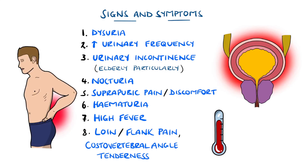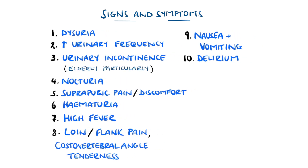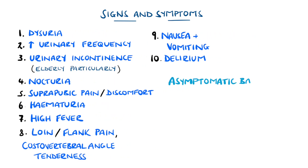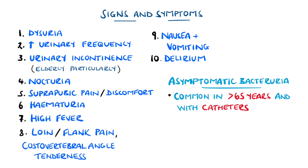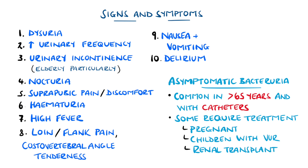Bear in mind that patients may also present with nausea, vomiting, and even delirium and sepsis in some instances, particularly the elderly. Importantly, many people over the age of 65, or with indwelling catheters, will have the presence of bacteria in the urine but are asymptomatic and do not necessarily need treatment. A subset of patients warrants screening and treatment for asymptomatic bacteriuria, including pregnant women, children with vesicoureteral reflux, and those with kidney transplants.